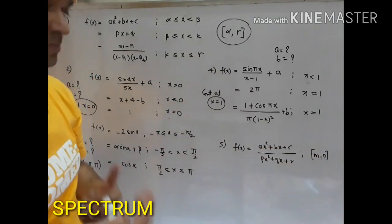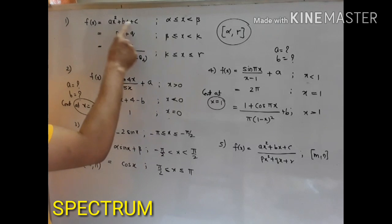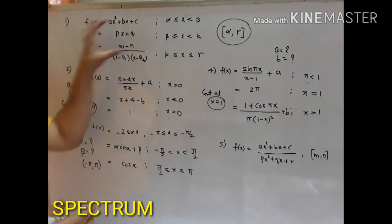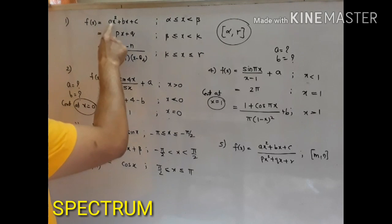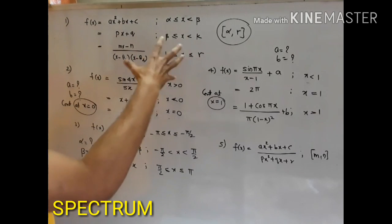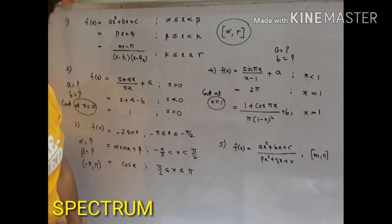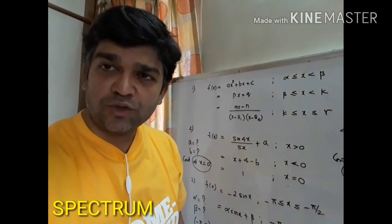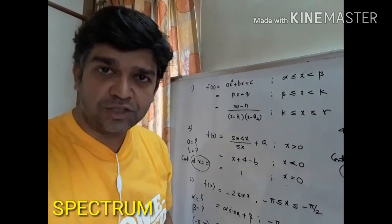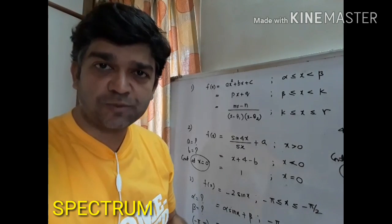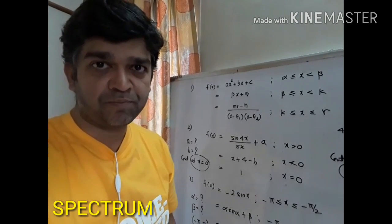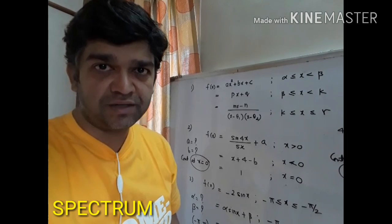Values like a, b, c, p, q, r, m, n, or theta are all constants — in real sense you will get specific numbers. Once you master these problems on continuity, you will be super expert in continuity and I'm sure you will score well in this topic. Next coming up is the derivative.